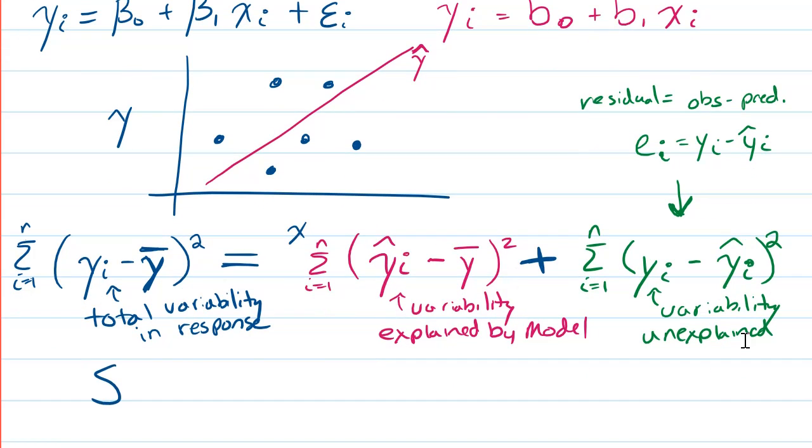So this is often called SS total. So the sum of squares total, because we're summing up square terms, equals the SS regression, or REG, the sum of squares explained by the regression, plus SS residual, RES. The sum of squares of the residuals.